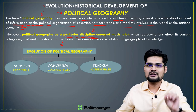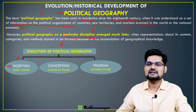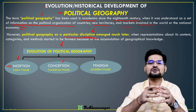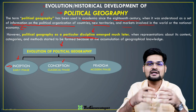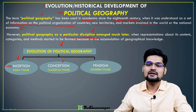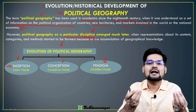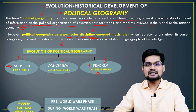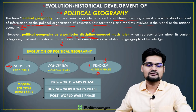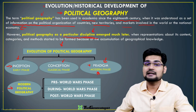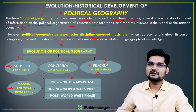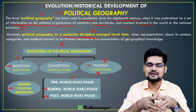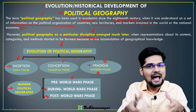The evolution of political geography can be understood in three major phases. First is the inception phase — the ancient phase of Greeks and Romans. Second is the conception or classical phase around the 18th century after the Age of Discovery, when newer concepts started to emerge. Third is the modern phase, when the subject was introduced in the university system. Within the modern phase, there are sub-phases: pre-World War, during World War, and post-World War.